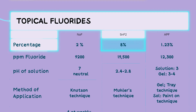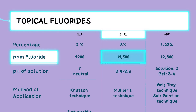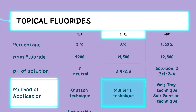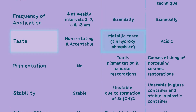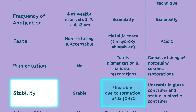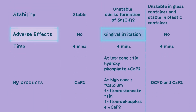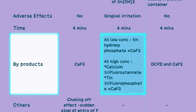8% stannous fluoride with a pH of 2.4 to 2.8 is the next topical solution. It has 19,500 parts per million fluoride and its method of application is Muller's technique, applied biannually. Its disadvantages include a metallic taste, tooth pigmentation, etching of porcelain or ceramic restorations, instability due to the formation of tin hydroxide, and gingival irritation. Application time is 4 minutes. At low concentration it results in the formation of tin hydroxyphosphate plus calcium fluoride; at high concentration, the by-products are calcium tri-fluorostanate, tin tri-fluorophosphate, and calcium fluoride. It reduces caries by up to 32%.